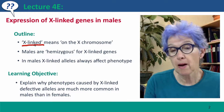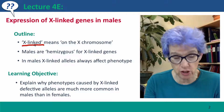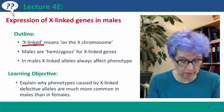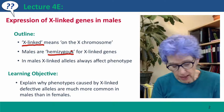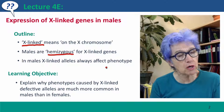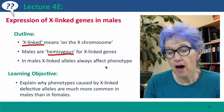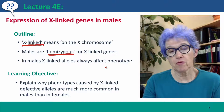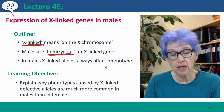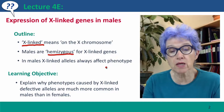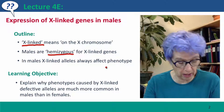We'll talk about males being hemozygous for X-linked genes — that is, they have only one copy. And then we'll talk about why in males, phenotype is directly determined by what allele of genes on the X chromosome the male has.